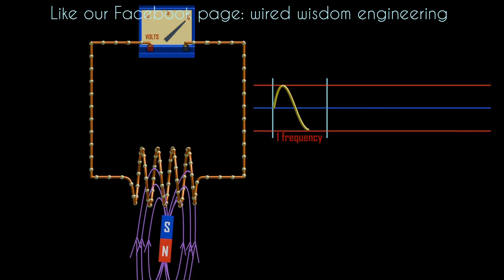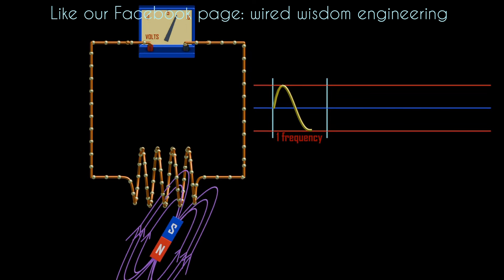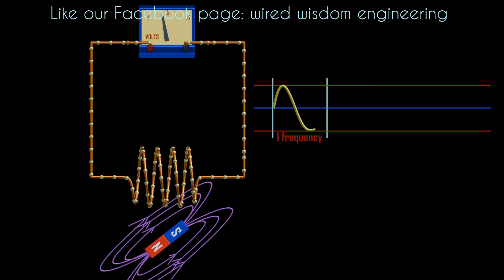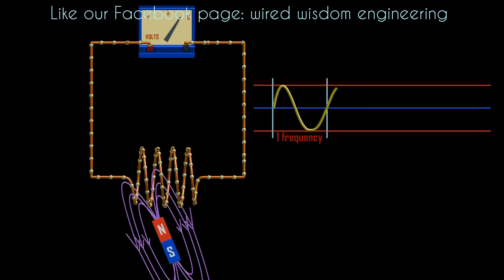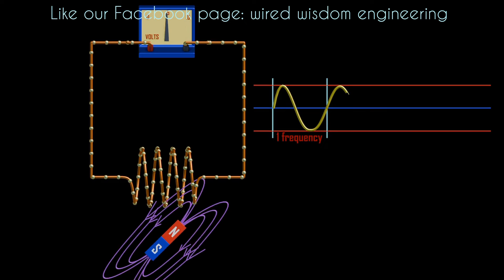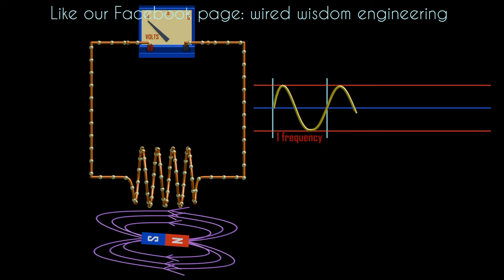Then when the south pole is moving away, the current gradually decreases. Similarly, when the north pole is approaching, the current gradually increases. Then when the north pole is moving away, the current gradually decreases. This, when plotted, forms a sinusoidal waveform.